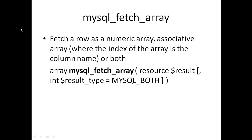mysql_fetch_array, on the other hand, gives you the option to pick one or the other or both. You can fetch the row as a numeric array, an associative array where the index is the column name, or both. If I use result type equal to MYSQL_BOTH, it doubles the size of the array returned — the array will have both integer indices representing columns and string indices representing column names. So I can reference the column in any way I want using mysql_fetch_array.